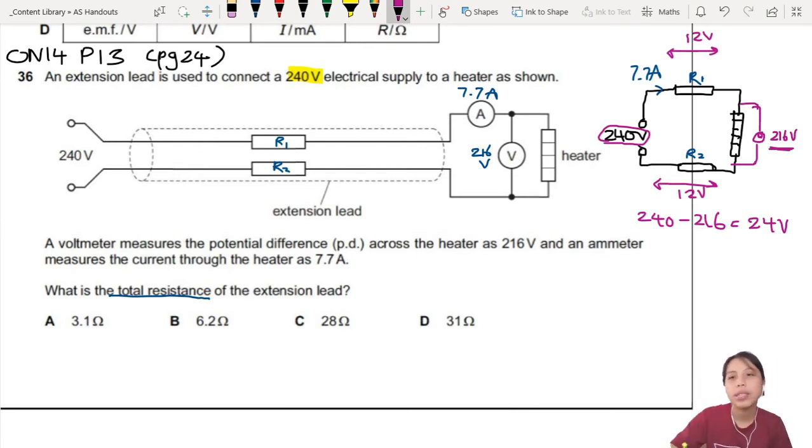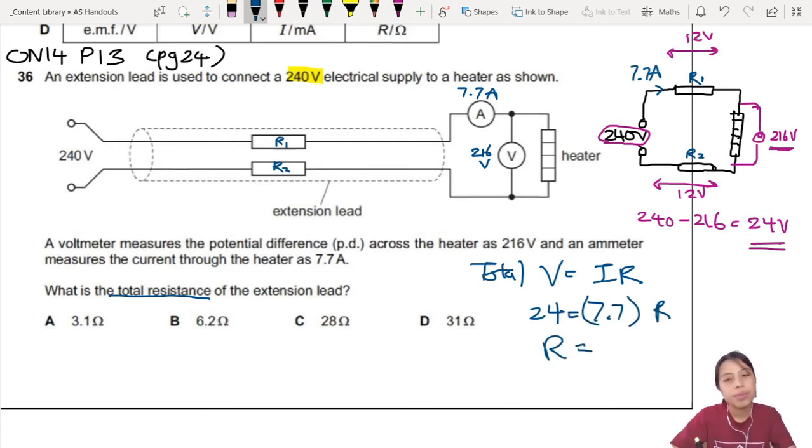There are multiple ways to do this. You can do total resistance or find one resistor and multiply, but let's do total resistance. We know because of the resistance, there's a drop of 24 volts. V equals IR. Total drop we know is 24 volts, current given to us is 7.7, resistance we're trying to find. So 24 divided by 7.7 is 3.116 ohm.